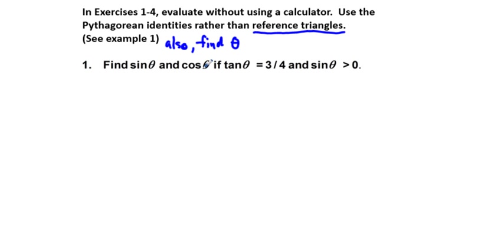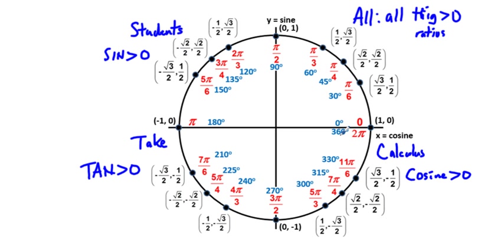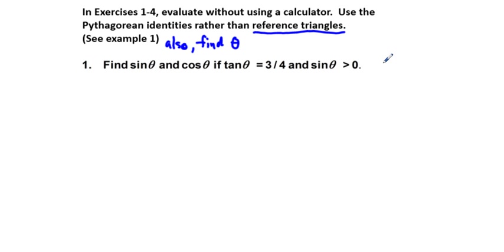Going back to problem one: find sine theta and cosine theta if tangent theta is three-fourths and sine theta is greater than zero. For tangent to be three-fourths, tangent is positive in quadrant one and quadrant three. Since sine is also greater than zero, we're dealing with quadrant one. So we'll make our drawing using a reference triangle.